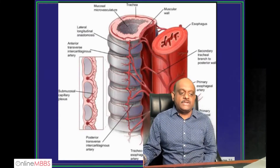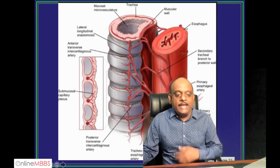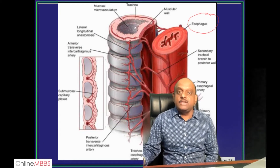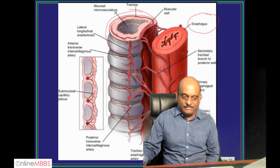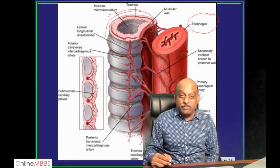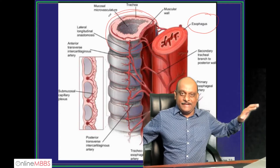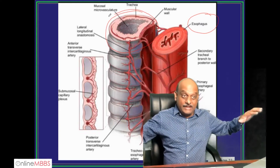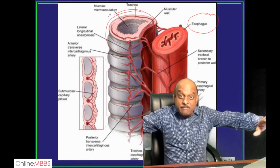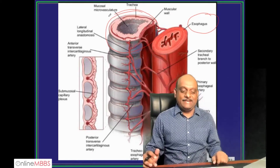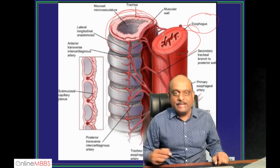Now this is a very interesting illustration - notice how closely the esophagus is hugging the trachea. Just like the famous Titanic movie scene where he embraces the heroine on the deck - like that, you have the trachea and esophagus very closely related to each other.